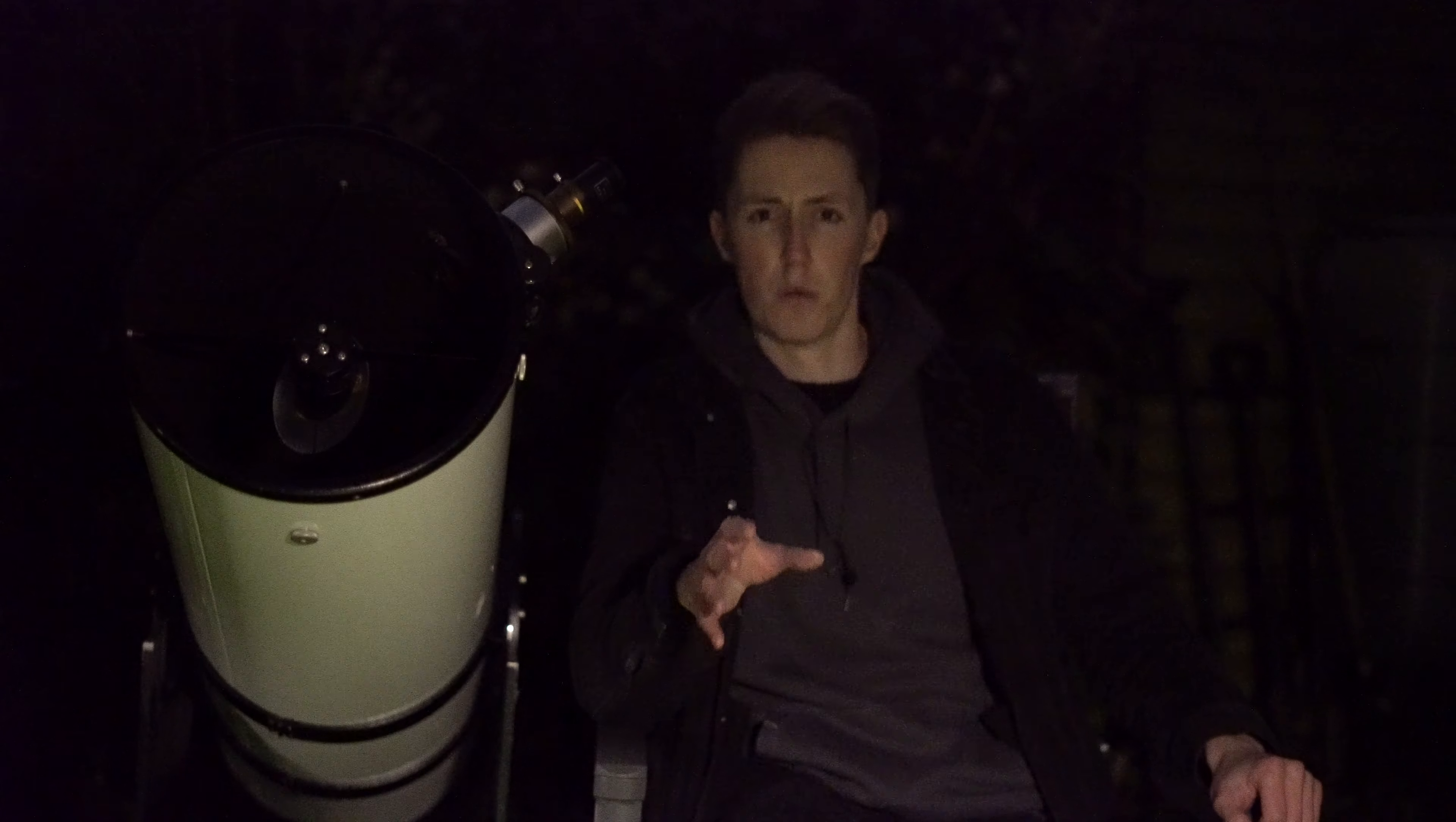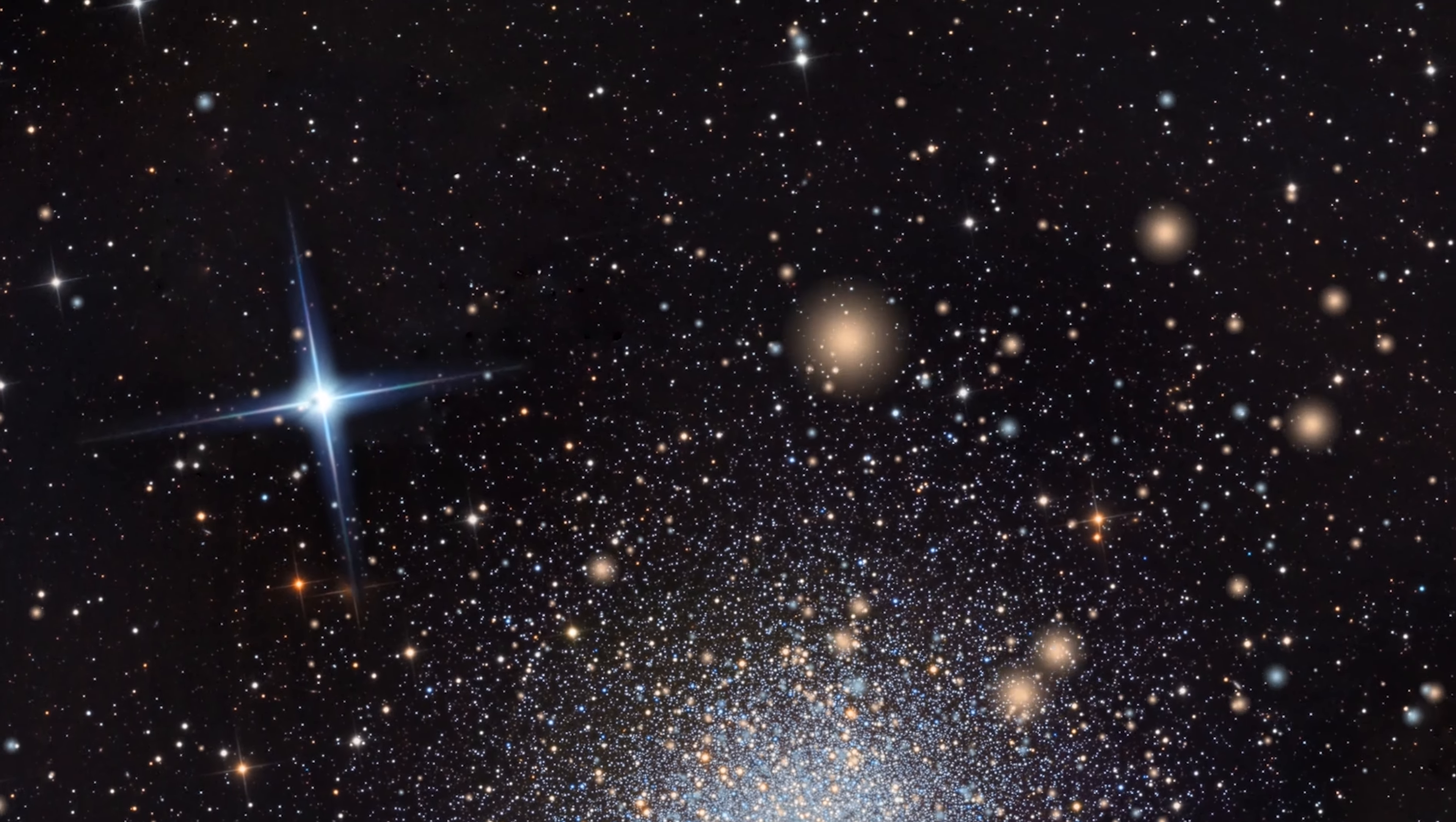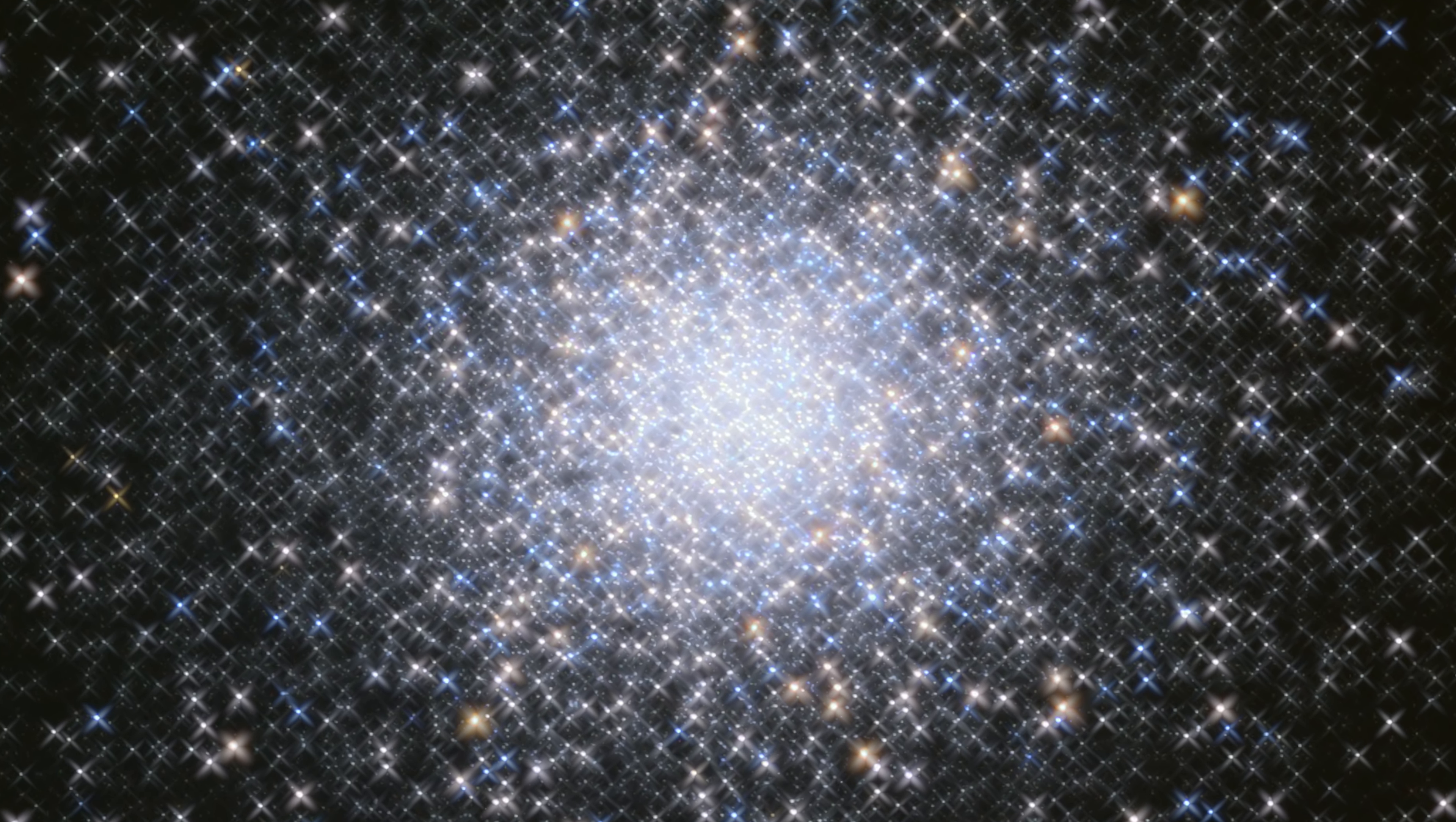However, there are places in the universe where stars are packed so tightly together that they often collide. This is M13, one of the gems of our universe, or to be more specific, 700,000 gems. This is the great globular cluster in Hercules. These stars are packed over 100 times more densely than our own stellar neighborhood, which means they often collide with one another and produce new stars. If it was possible for life to survive in such a disruptive environment, then their night sky would look very different to ours, because theirs would be illuminated by starlight.